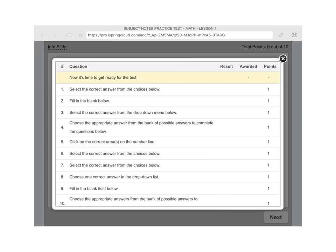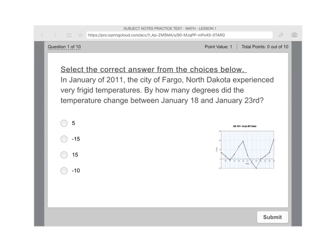So you see me here. So now let's look at this one. It says select the correct answer. So again, the skills that you just learned in positive and negative numbers in this lesson are here. But let me just kind of show you how this example. So in January of 2011, the city of Fargo, North Dakota experienced very frigid temperatures. By how many degrees did the temperature change between January 18 and January 23rd?